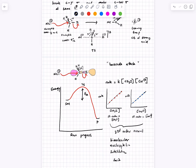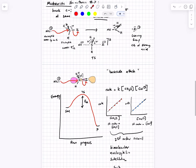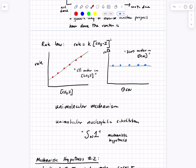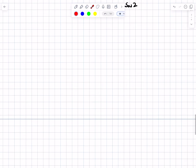Now that we've established these mechanisms, let's think about how — aside from rate experiments — we can probe mechanism. If you didn't know what the mechanism was, the first thing you'd do is rate experiments: you'd measure rate and see how it depends on the concentration of your starting materials. If you saw a unimolecular dependence only on methyl iodide, you'd conclude this is an SN1 type reaction. If you saw bimolecular dependence on methyl iodide and CN⁻, you'd say this is an SN2 reaction. But there are other clues as well — one key way to assess mechanism is by the stereochemical outcome of the reaction.